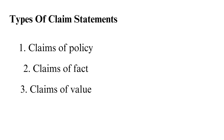Claims of value. The claim of value seeks to argue that one thing is positive while another thing is negative. It also seeks to rate particular items using qualitative judgments and often uses comparisons with other items to make its case. A claim of value could look something like: Italian food is the best out of all cuisines. In this case, you should identify and define the foods in the cuisine and then compare other cuisines and their foods.